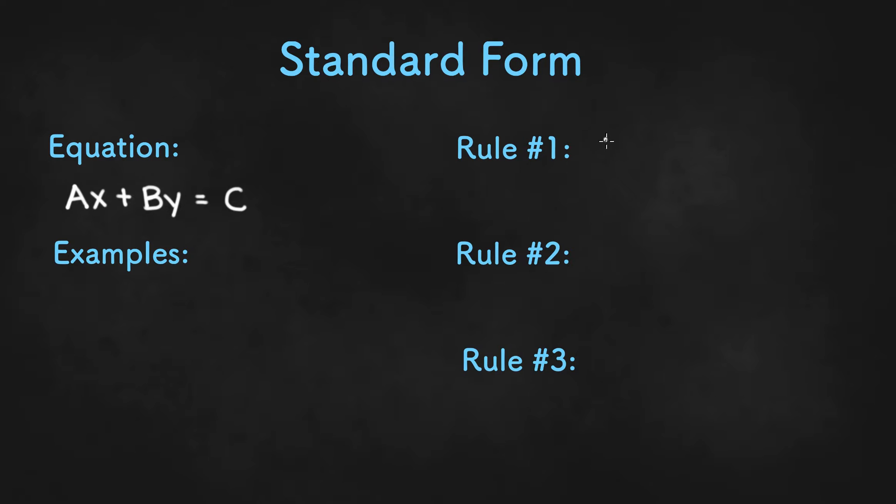So rule number one has to do with A and it basically states that A cannot be a negative number. So we can't have something like negative x or negative 3x.